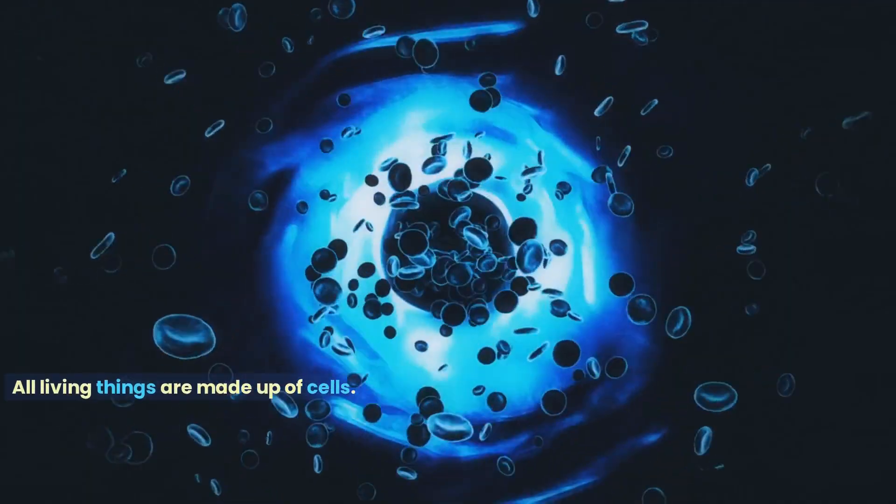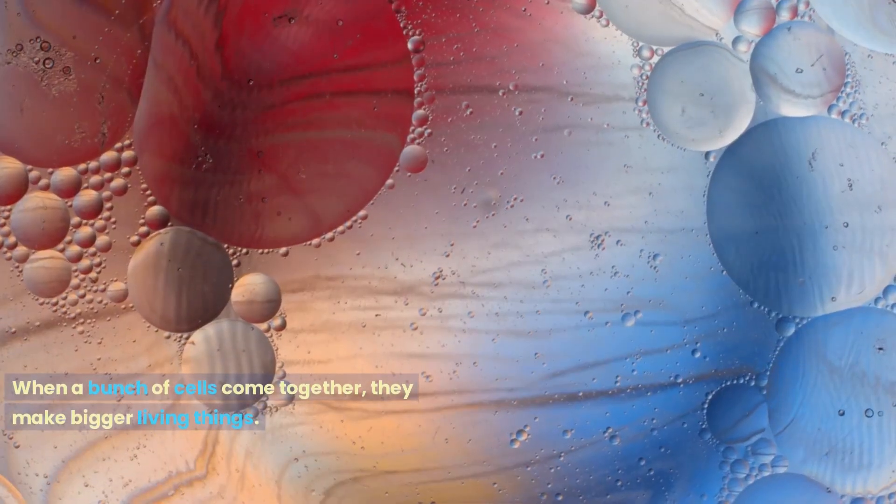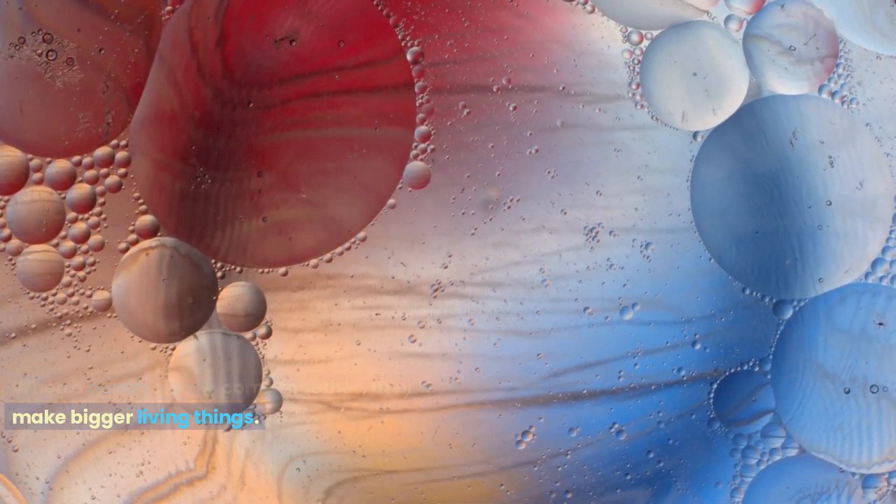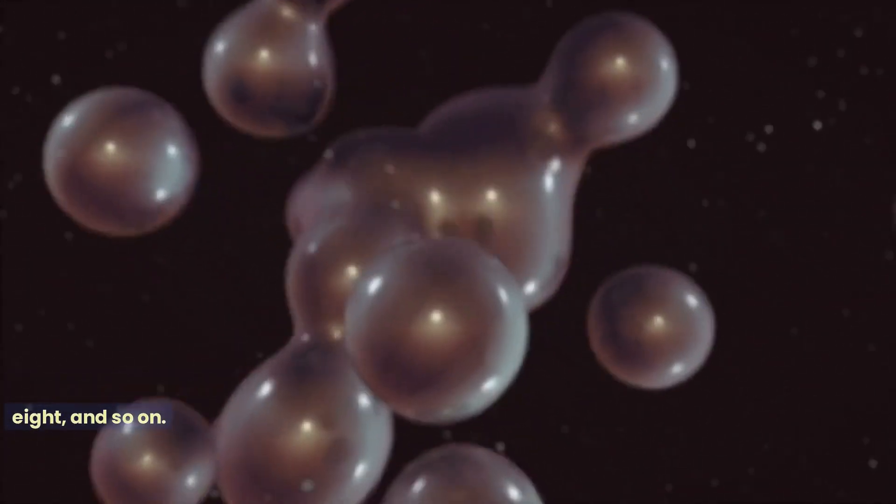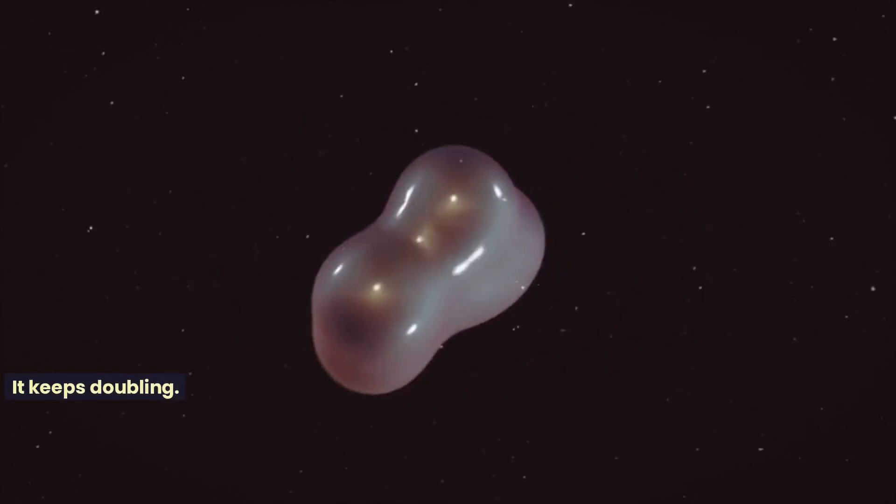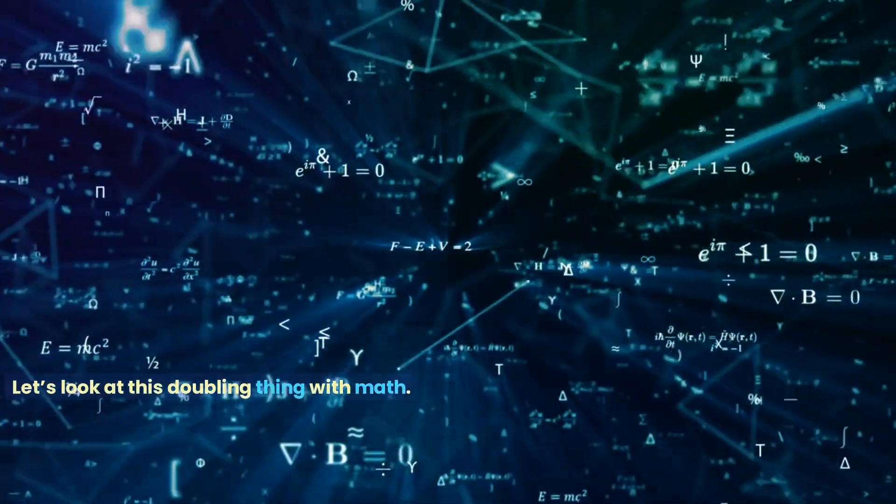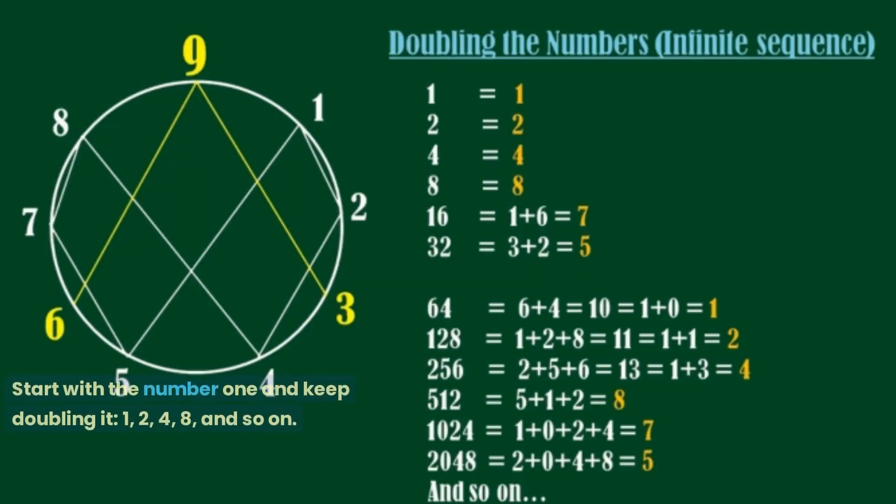All living things are made up of cells. When a bunch of cells come together, they make bigger living things. One cell splits into 2, then into 4, then 8, and so on. It keeps doubling. Let's look at this doubling thing with math. Start with the number 1 and keep doubling it: 1, 2, 4, 8, and so on.